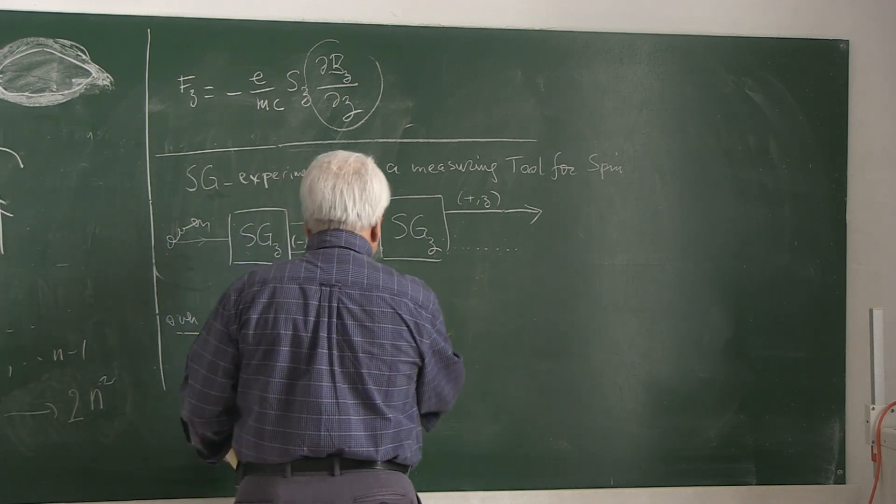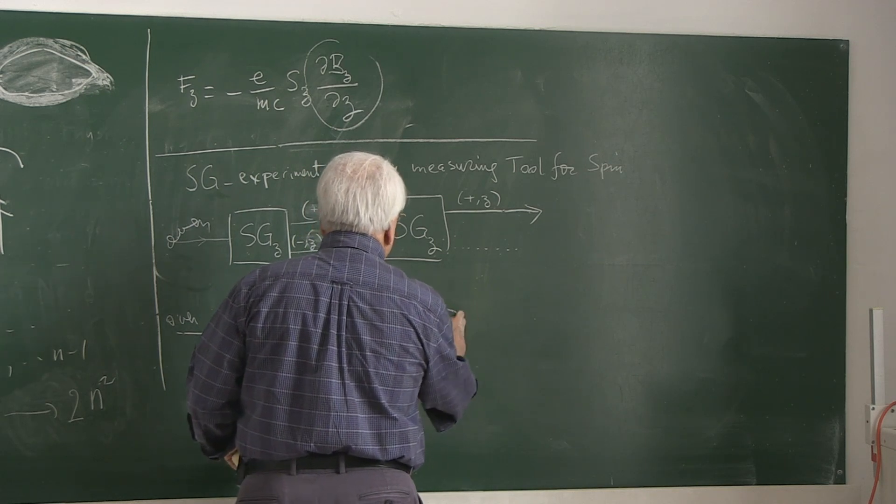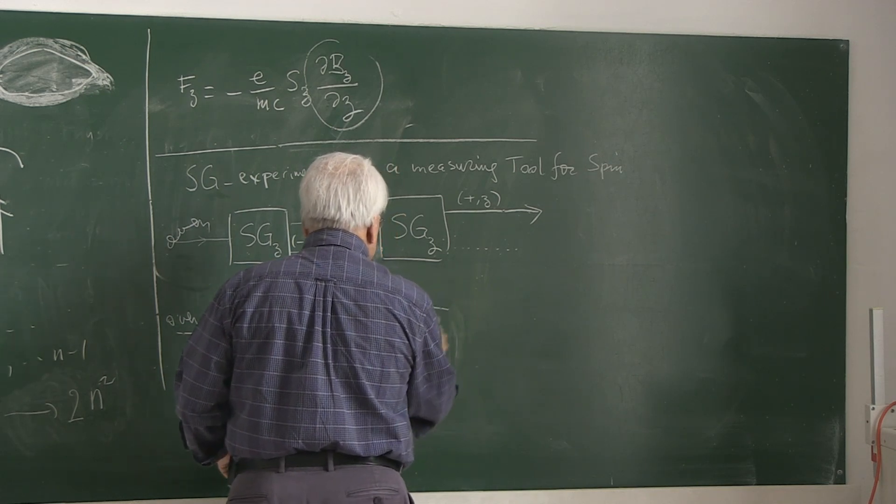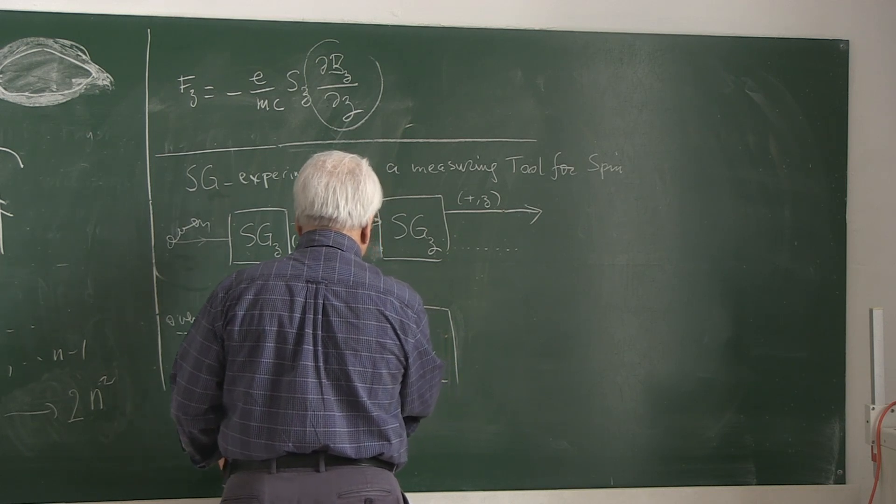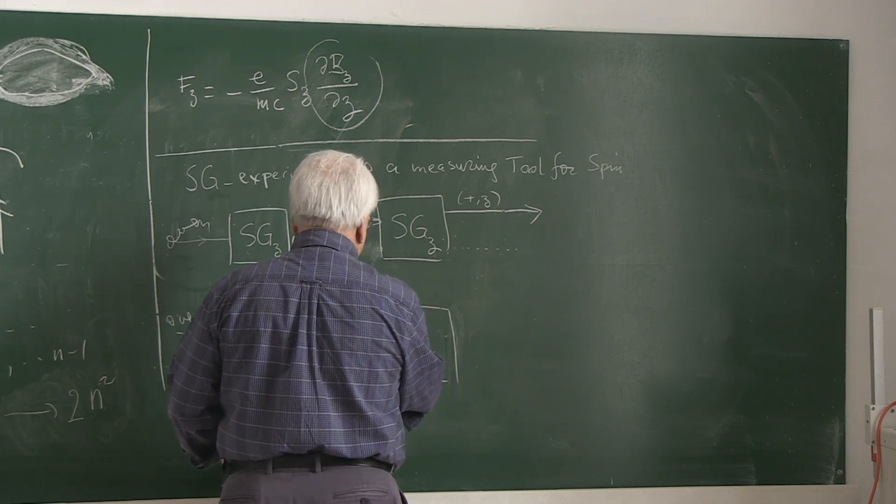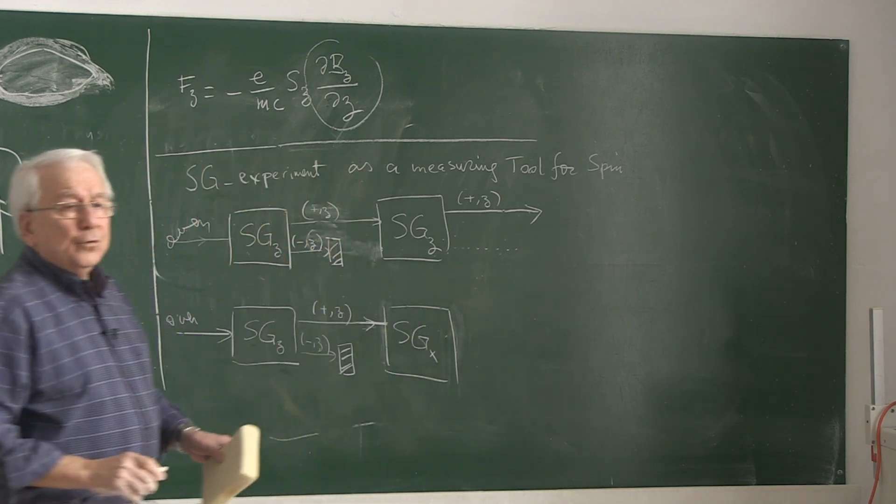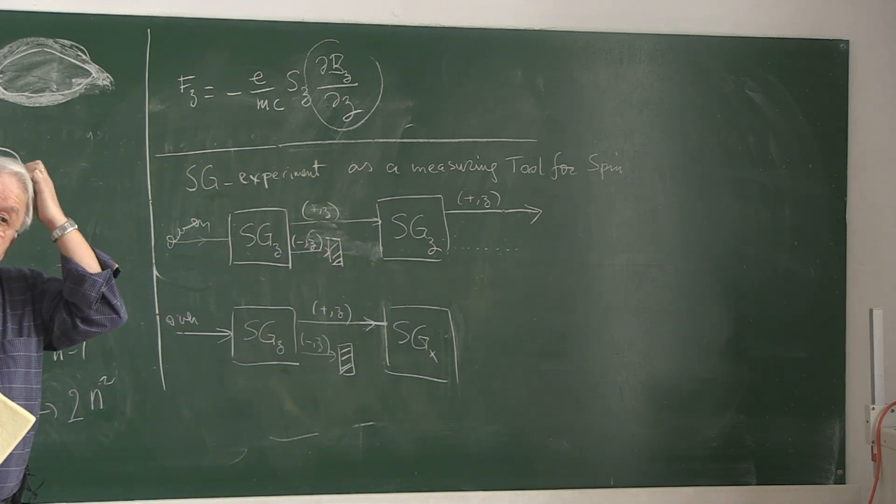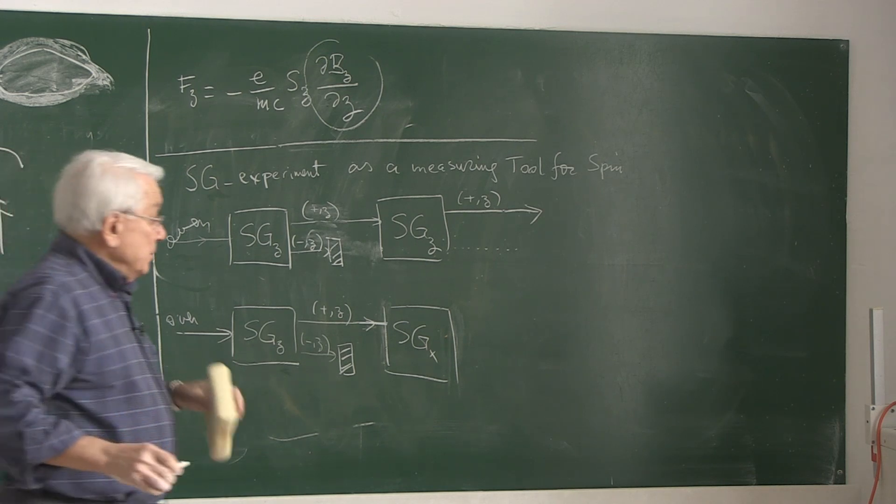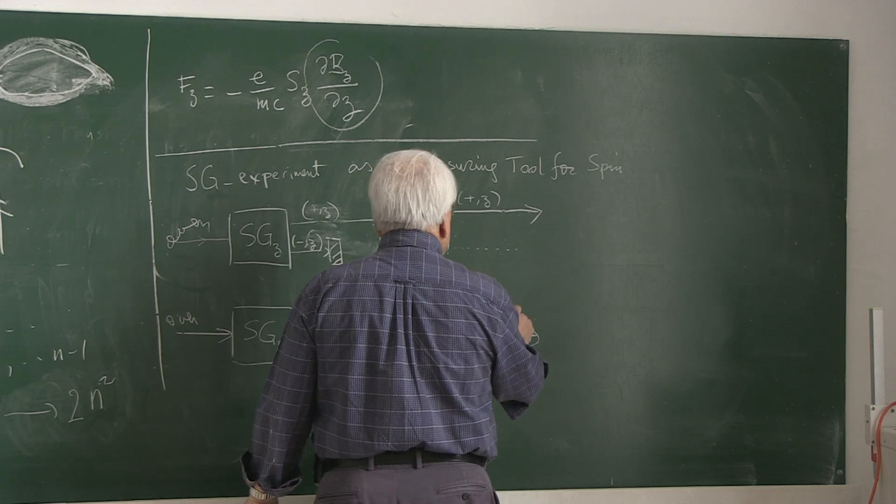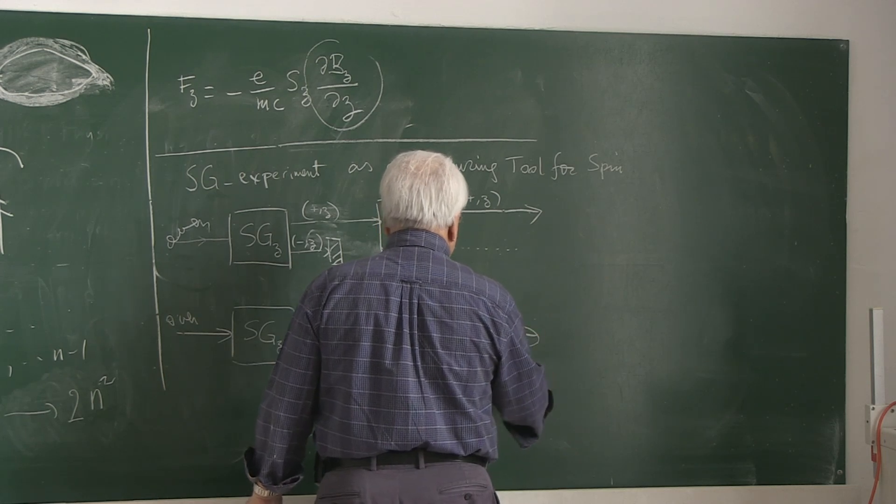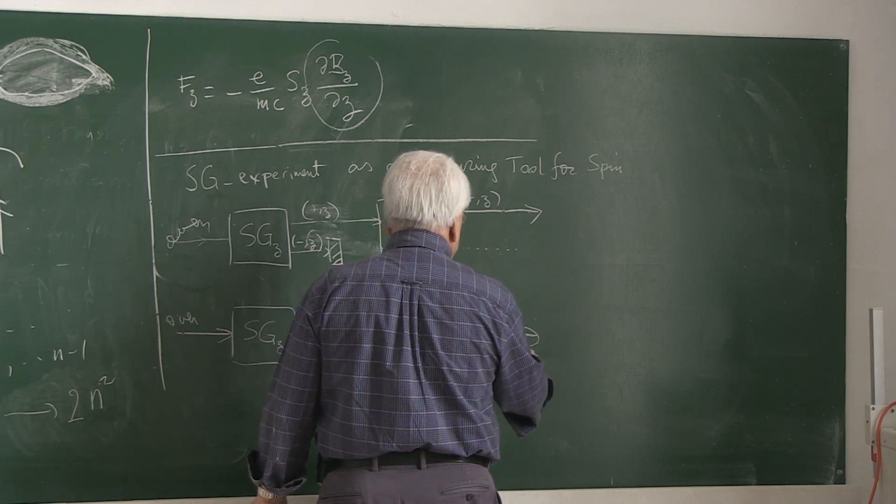We have the up-polarized one reaching. Now, this time, I am putting here an X-type of Stern-Gerlach gadget. What do you get?